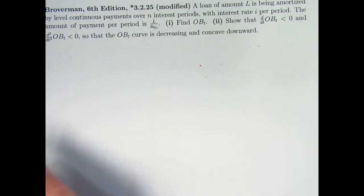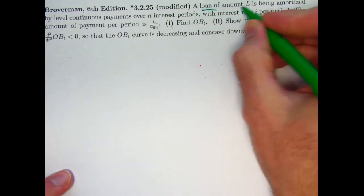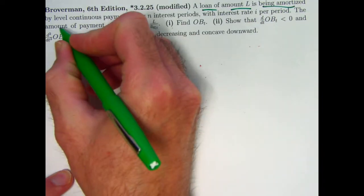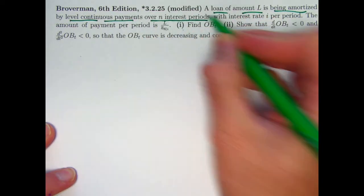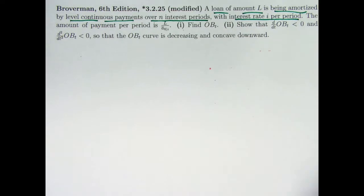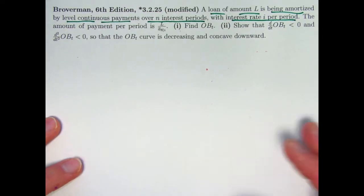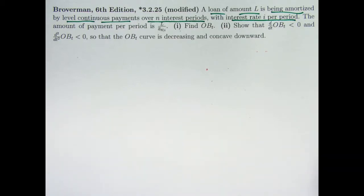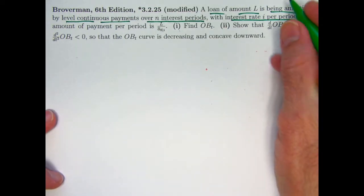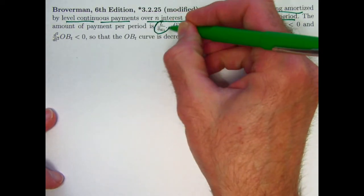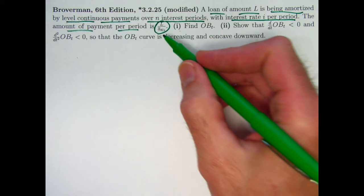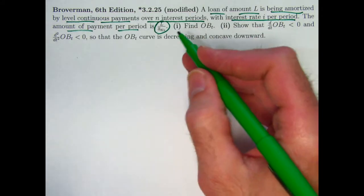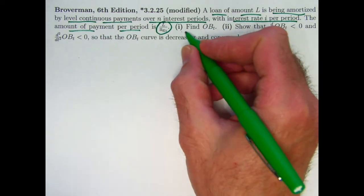Here's the problem statement, modified to be simpler than what you find in the book. A loan amount L is being amortized not with a discrete payment stream but with a level continuous payment stream over N interest periods, interest rate i per period. You could think of the periods as years and the payments in dollars per year. The amount of the payment is given by L divided by the present value of a continuous payment stream with payment 1 per unit time.